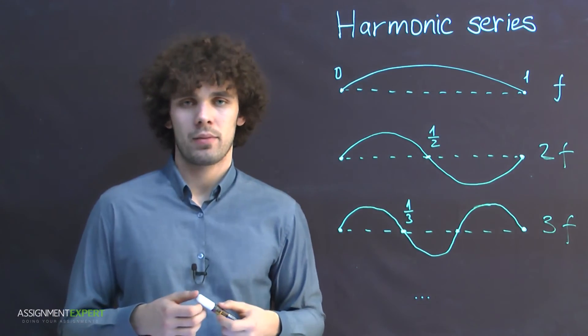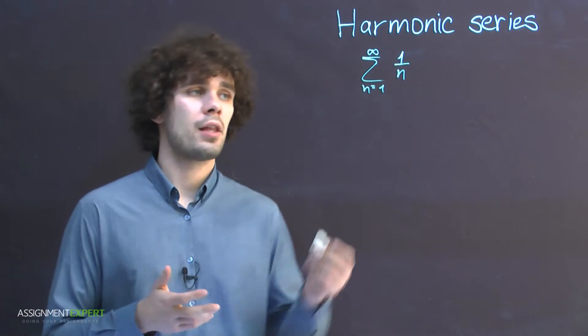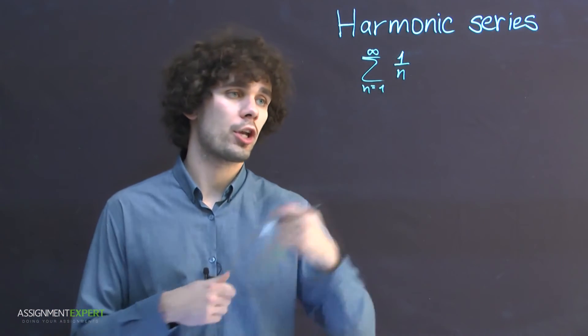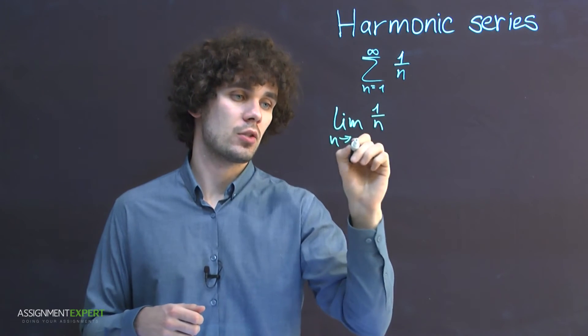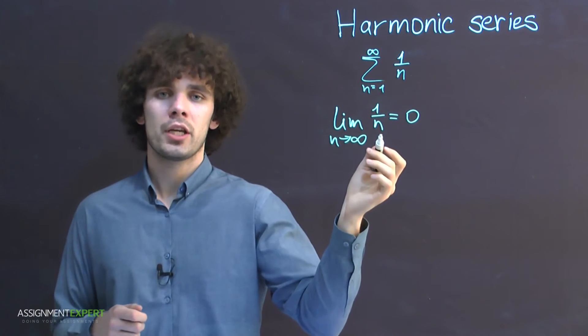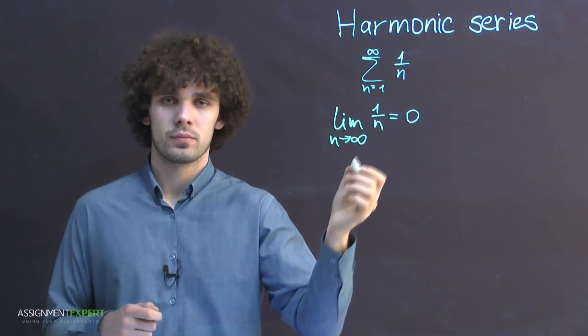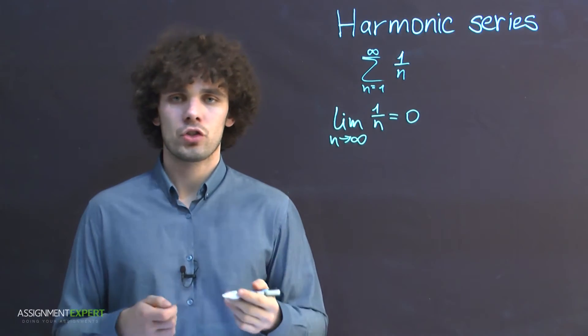Now back to math. We can easily check that the limit of the general term of harmonic series, limit of 1/n where n tends to infinity, equals 0, because n in the denominator tends to infinity.